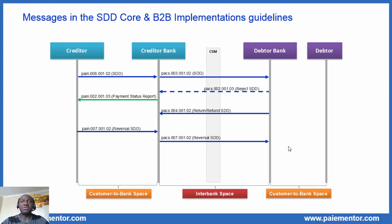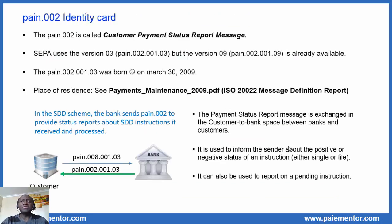Let's take a closer look at the PAYING 2 identity card. The PAYING 2 is called Customer Payment Status Report Message. Note that the same message is used in the SDD schemes and in the SCT, the SEPA Credit Transfer schemes. In SEPA, version 3 is used, but version 9 is already available in the ISO 20022 standards at the time of this video. So the ISO 20022 standards is 6 versions ahead of SEPA.